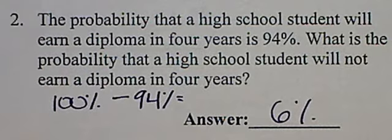Two states: the probability that a high school student will earn a diploma in four years is 94%. What is the probability that a student will not earn a diploma in four years?